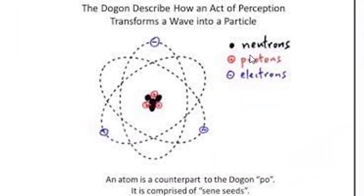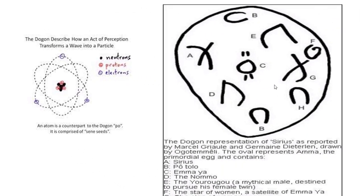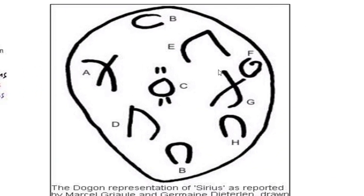Let's look at the atom. The Dogon describes how an act of perception transforms a wave into a particle. This is an atom which is a counterpart to the Dogon's Po. It is comprised of the sene seeds. Image of the origin of matter. All matter is formed by the continuous addition to the elements beginning with the Po, the primary building block, the image of the Amma. Creative will is located inside the Po. So your will to change the situation and your will to be what you want to be lies within you as a will in yourself.